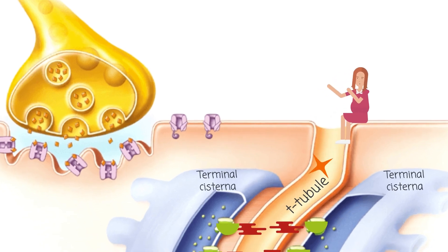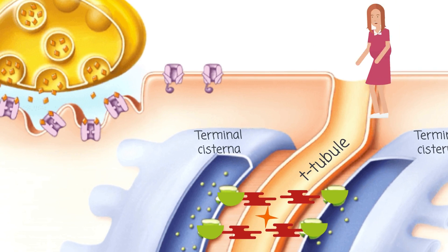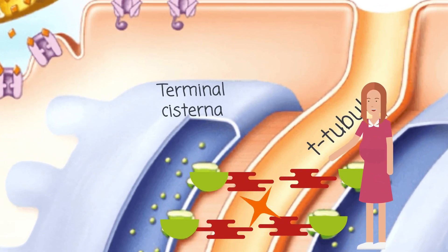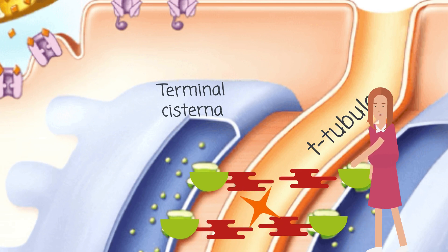Let's see what we have in triad and how action potential affects them. Here we have two different receptors. The receptor in T-tubule, known as dihydropyridine, and one in terminal cisterna, which is called ryanodine receptor.